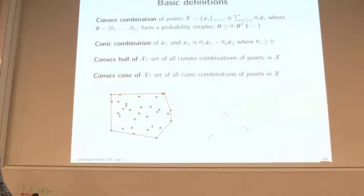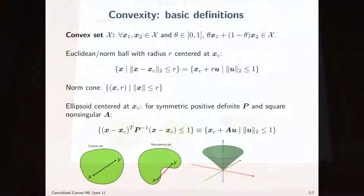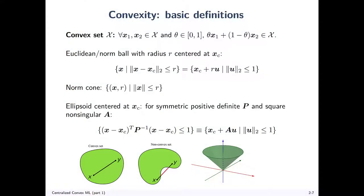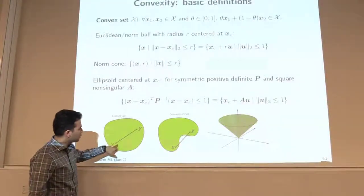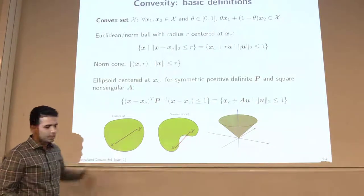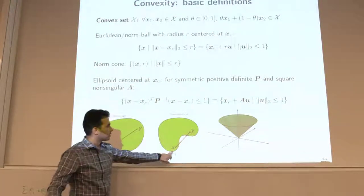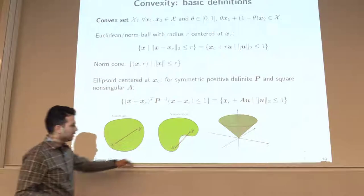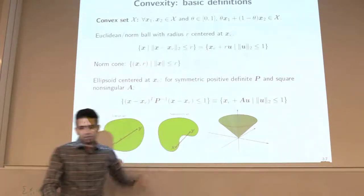Convex cone is similar to convex hull — it's just the set of all conic combinations of the points. A set is convex if you pick any two points and take any convex combination of those two, the result should lie in the same set. This is a convex set, and this is a standard example of a non-convex set where all the points lying in this red line are not in the set.